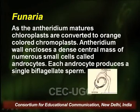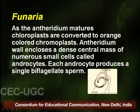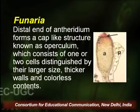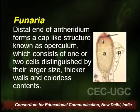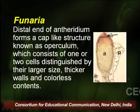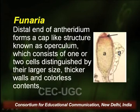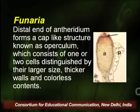Each androcyte produces a single biflagellate sperm. The two flagella are of equal type and they are of whiplash type. The distal end of the Antheridium forms a cap-like structure known as operculum, from which the antherozoids are released. The operculum consists of one or two cells distinguished by their larger size, thicker walls, and colourless content.